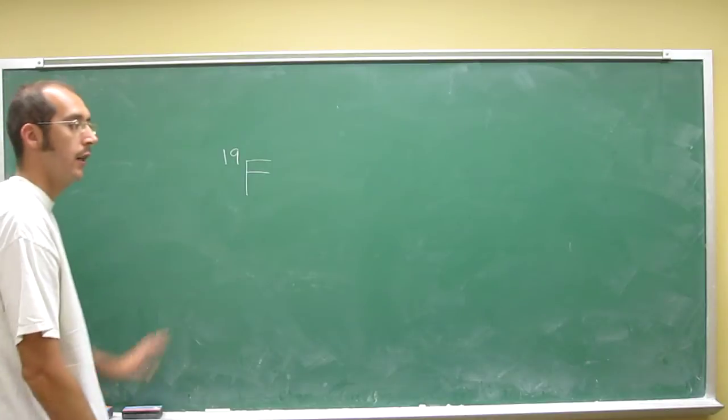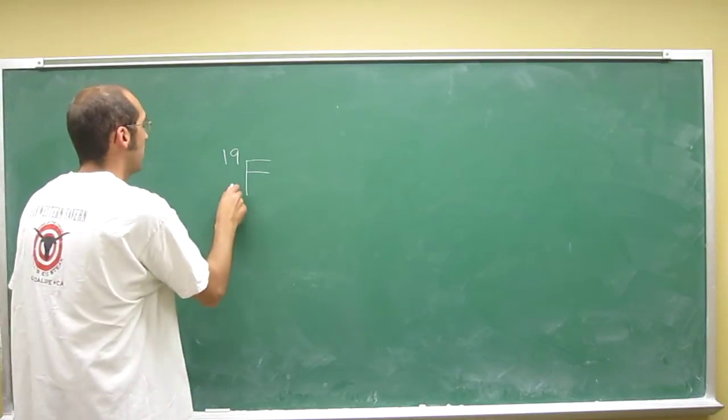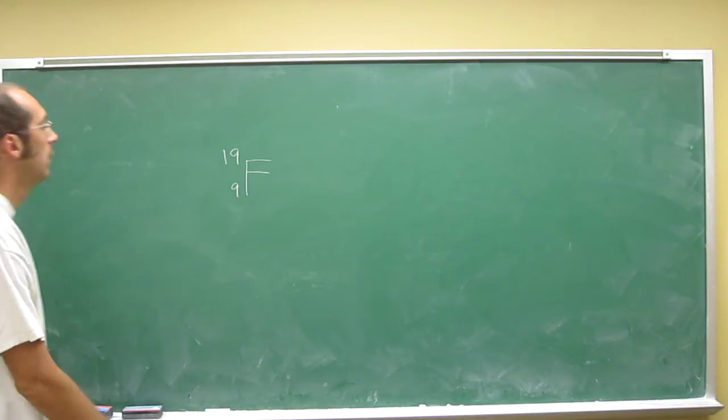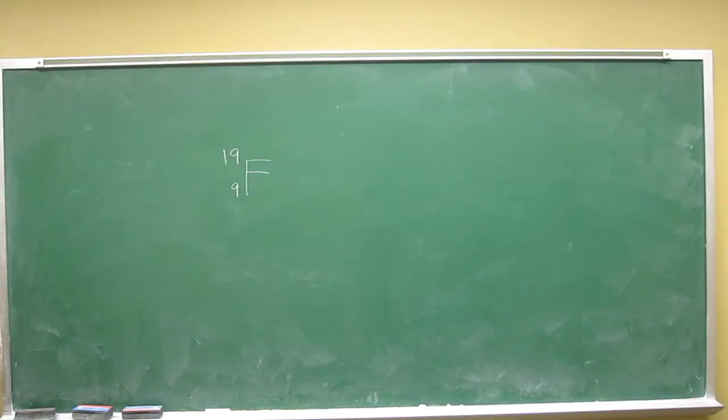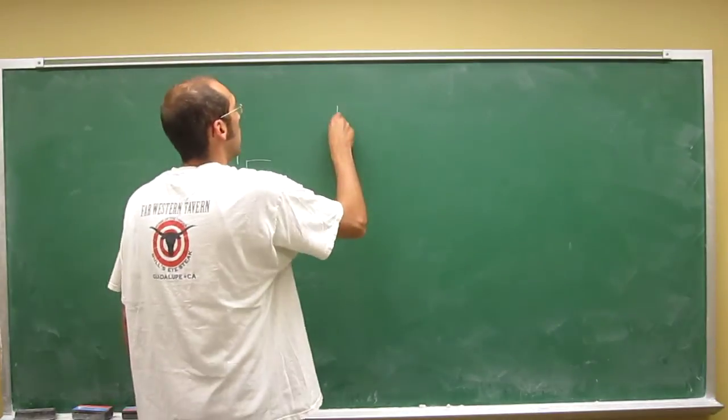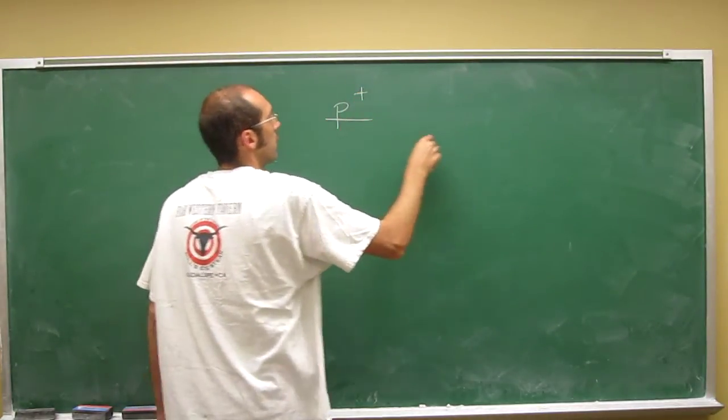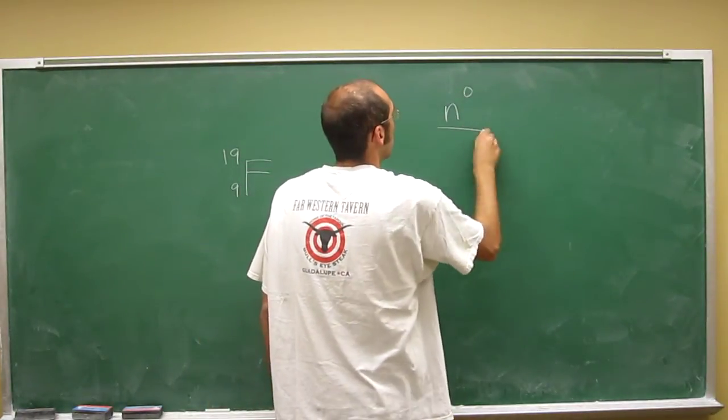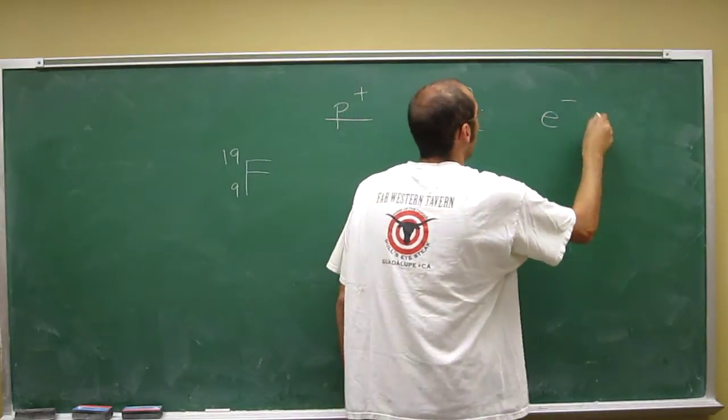So fluorine 19, I guess it's written like this in the problem. Then it asks, how many protons, neutrons, and electrons are in this? So number of protons, neutrons, and electrons.